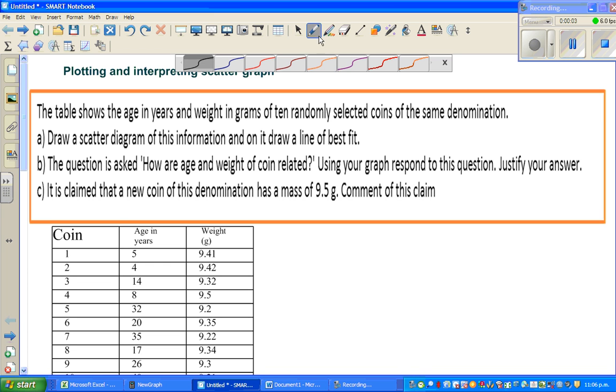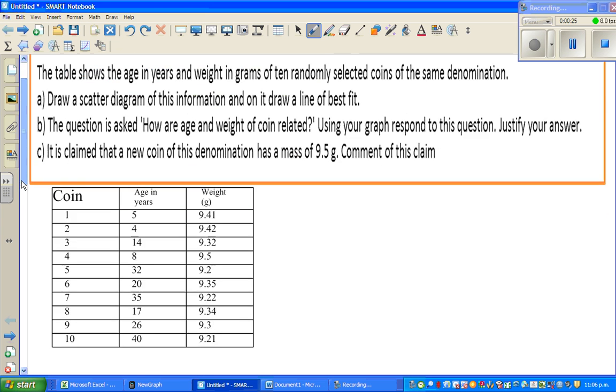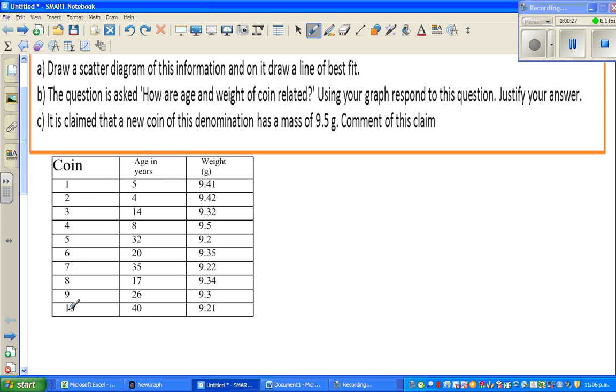Hello, in this video I'm going to do a topic on scatter graph, plotting and interpreting scatter graph. So let's read the question. The table shows the age in years and weight in grams of 10 randomly selected coins of the same denomination. So this is the table, you get 10 randomly selected coins, this is the age in years and this is the weight in grams.